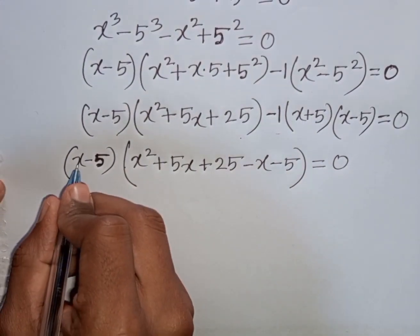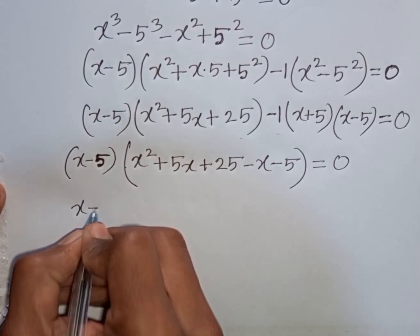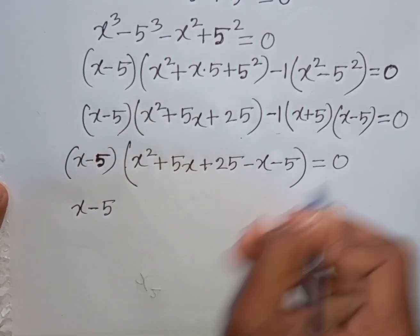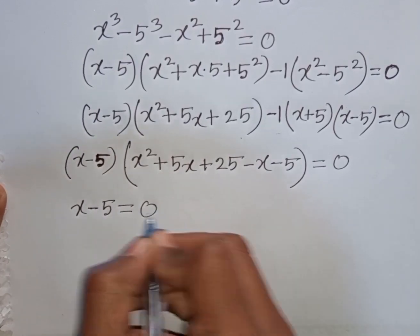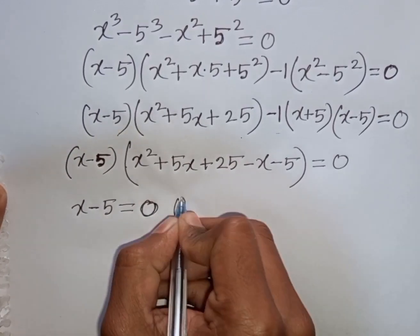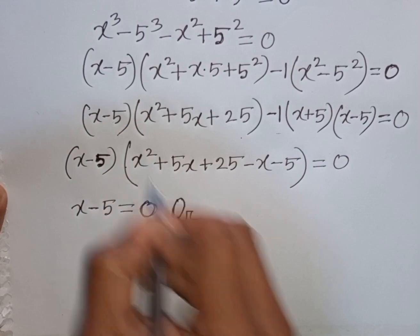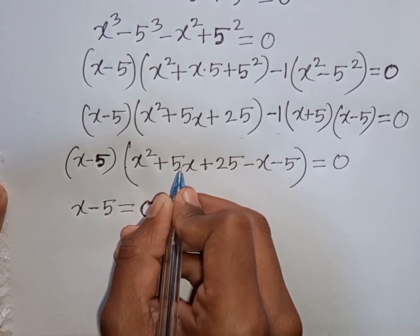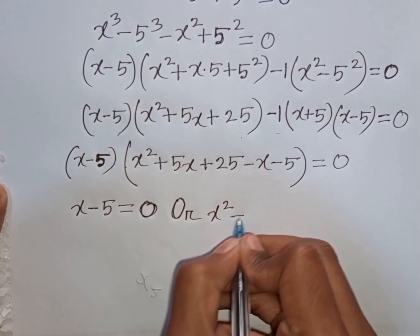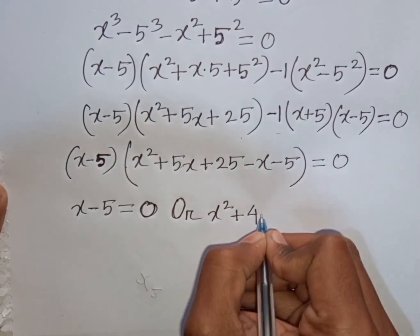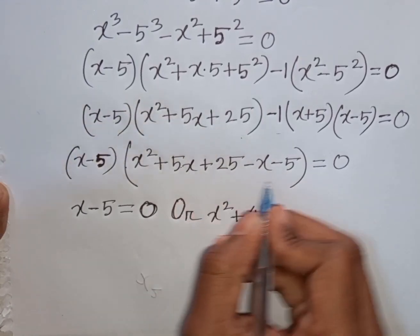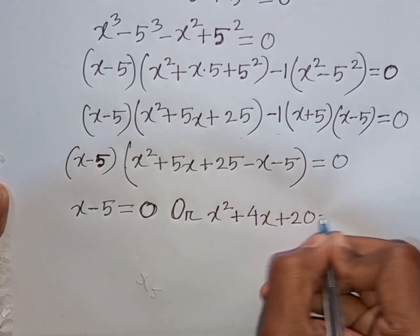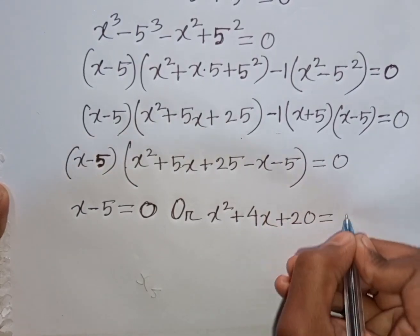Now we can write: (x - 5) = 0 or x² + 5x - x + 25 - 5 = 0, which simplifies to x² + 4x + 20 = 0.